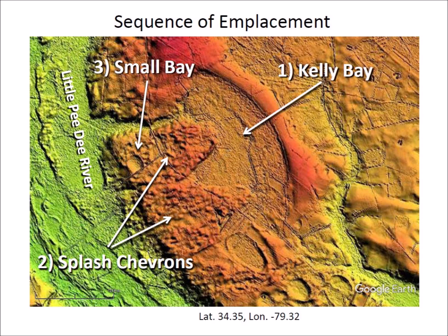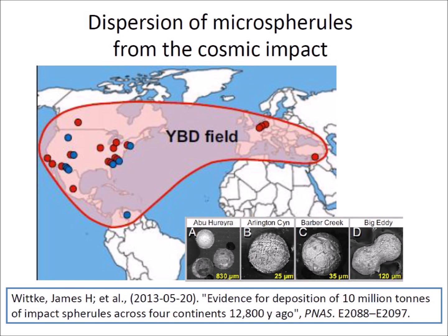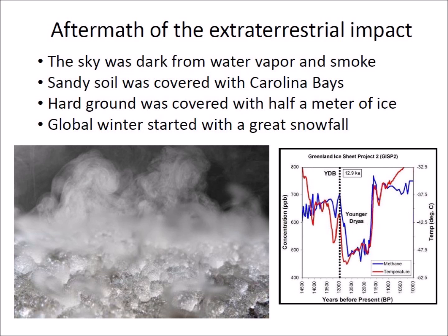The Younger Dryas extraterrestrial impact produced microspherules from the earth and from the impacting body that were widely distributed by the prevailing winds across 50 million square kilometers throughout North America, South America, Europe and the Middle East. In the aftermath of the extraterrestrial impact, the land was shrouded in darkness by the thick clouds, smoke and the ice crystals in low Earth orbit that blocked the light of the Sun.